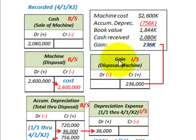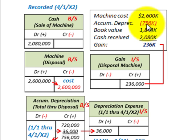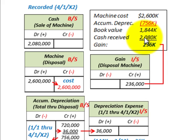In this case we're going to have a gain on the disposal of the machine. We calculate it as follows: machine cost less accumulated depreciation through the date of sale gives us our book value. The cash received is greater than our book value, so the difference is recognized as a gain of $236,000. On our income statement, we credit a gain of $236,000.